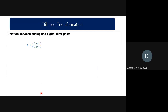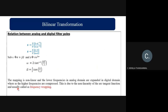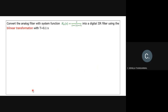To find the relationship between the analog and digital filter frequencies, substitute s = σ + jΩ and z = re^{jω}. This gives Ω = (2/T)·tan(ω/2), or equivalently ω = 2·tan⁻¹(ΩT/2). Since the mapping is nonlinear, lower analog frequencies get expanded in the digital domain while higher frequencies get compressed. To avoid this nonlinearity of the arctangent function, we use frequency pre-warping.